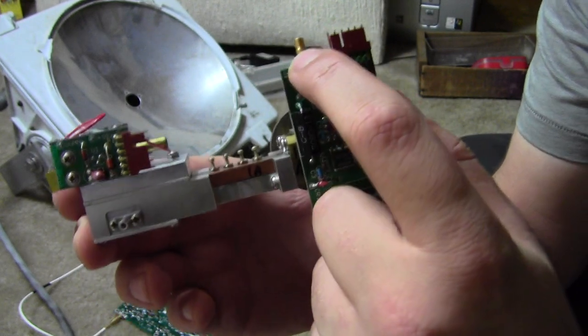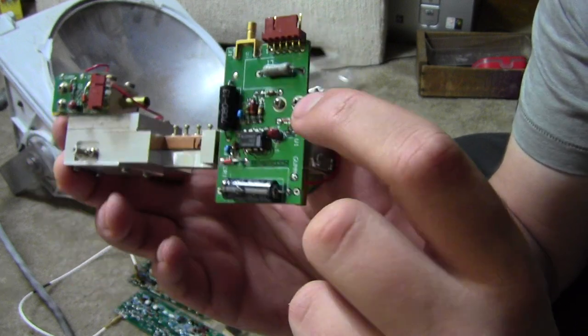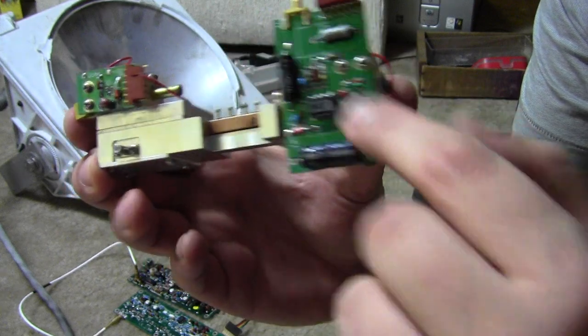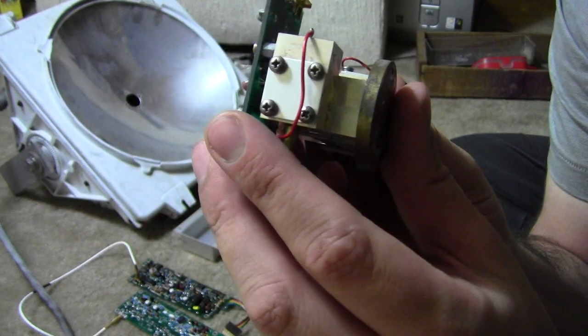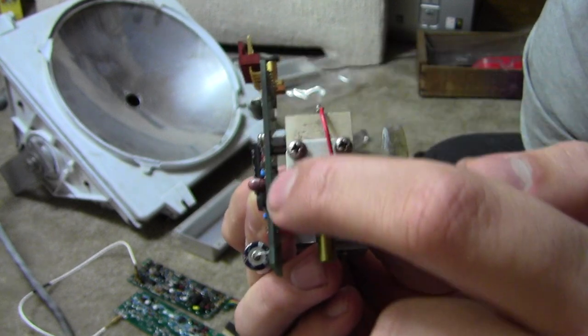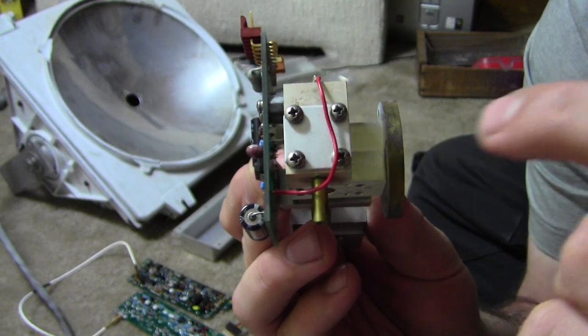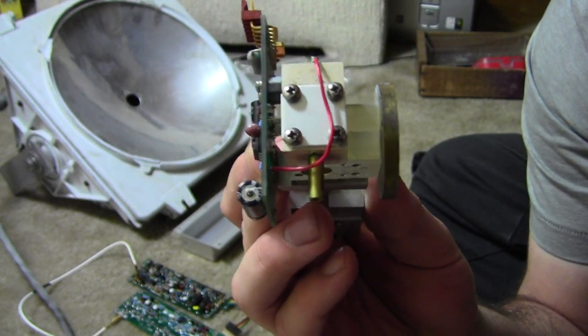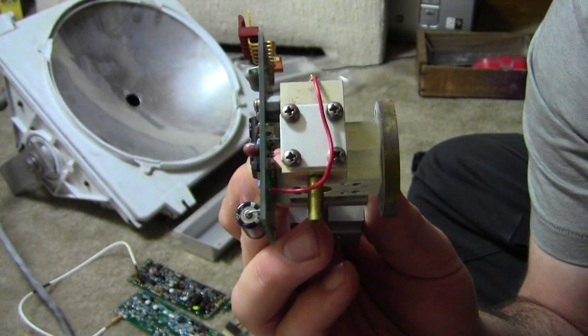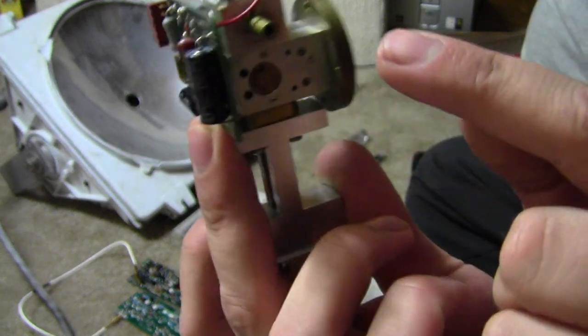And what it does is it goes through some circuitry into this part right here, which is a gun diode oscillator. A gun diode is an N-type semiconductor diode that, when put in a resonant cavity, oscillates at a specific frequency.